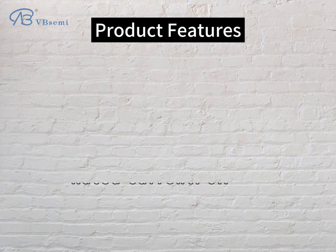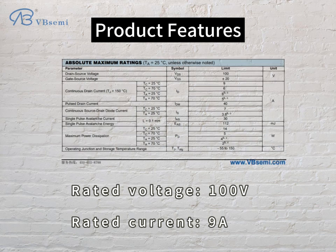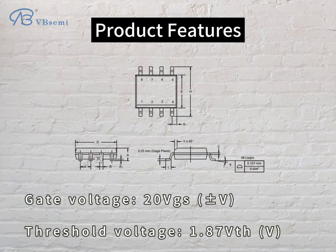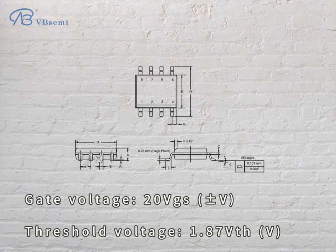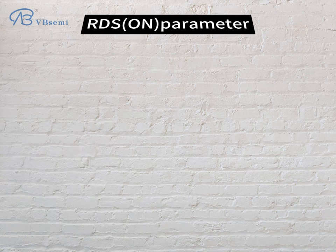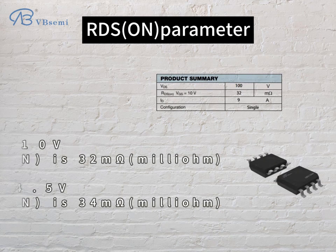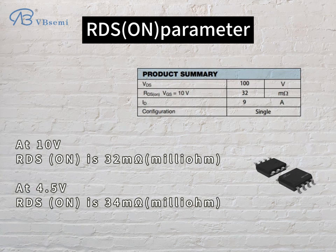Product features: rated voltage 100V, rated current 9A, gate voltage ±20V GSV, threshold voltage 1.87V. RDS on parameter: at 10V, RDS on is 32mΩ; at 4.5V, RDS on is 34mΩ.